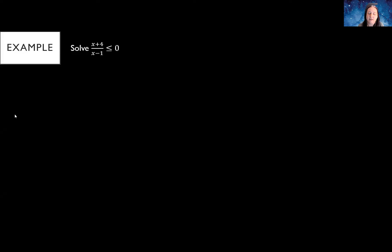Our first example: we have (x + 4) / (x − 1), and it's less than or equal to zero. We've already got the right side at zero. What you do is take the numerator and the denominator and set those both equal to zero. If there's something to factor, you factor first, but we don't need to factor here.